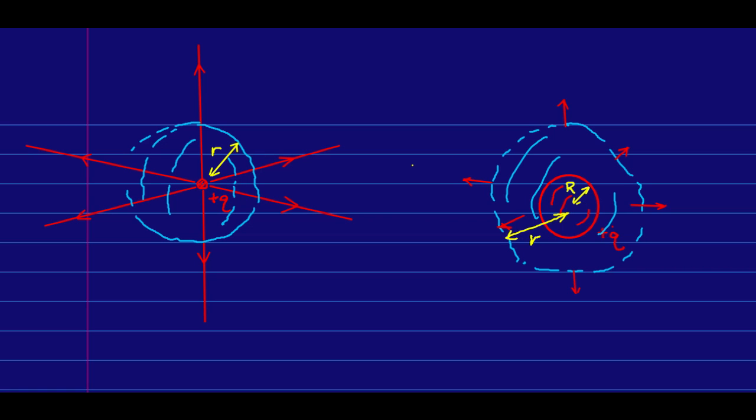But also, if this sphere has the same charge on it as this particle did, then the flux through this sphere also has to be the same. And that tells us that the number of E field lines through the sphere is the same,